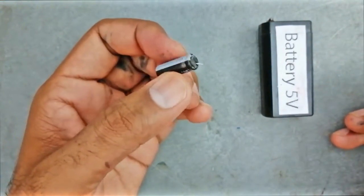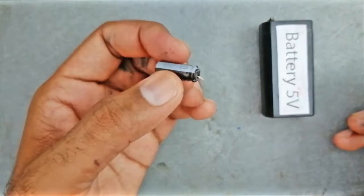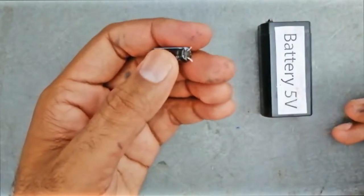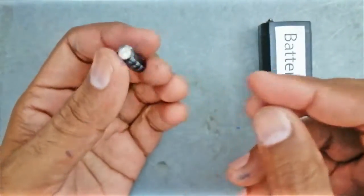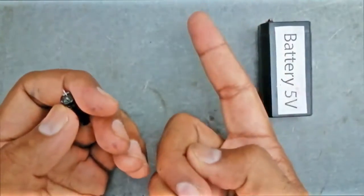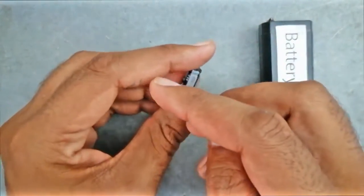That means when we attach any capacitor with electric current it charges and has voltage. Engineers use this property of capacitor to build memory. When it has current inside it gives one value, when it has no current it gives zero value.